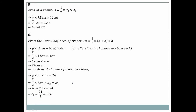Question number five: Area of rhombus formula = half × diagonal one × diagonal two. From the figure, diagonal one = 7.5 and diagonal two = 12. So: half × 7.5 × 12 = 7.5 × 6 = 45 square centimeters.